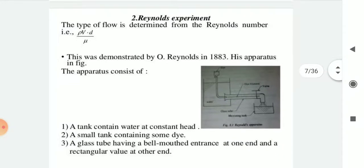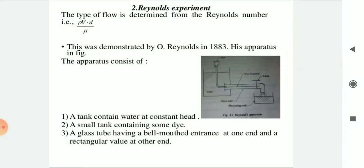The type of flow is determined from the Reynolds number, rho·V·d divided by mu. This was demonstrated by O. Reynolds in 1883. His apparatus consists of a tank containing water at constant head, a small tank containing dye, and a glass tube having a bell-mounted entrance at one end and a regulating valve at the other end.